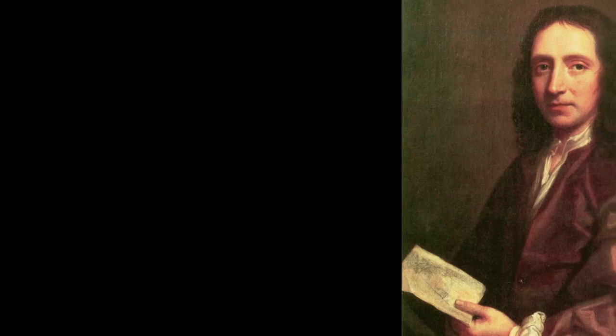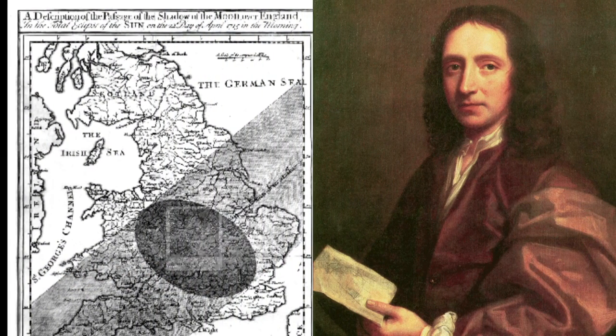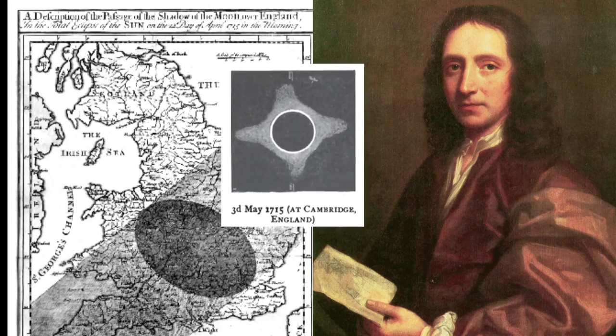More than a century later, Edmund Halley predicted the timing and path of a total solar eclipse that took place on May 3, 1715.